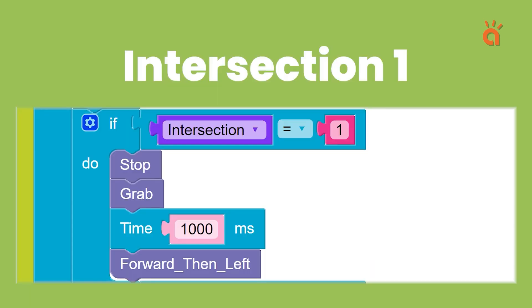For the first intersection, the robot will stop and grab the resource and then take a left turn. To do this, we will use this function.